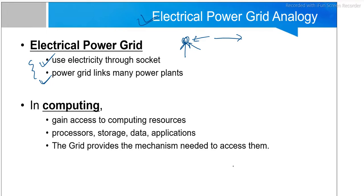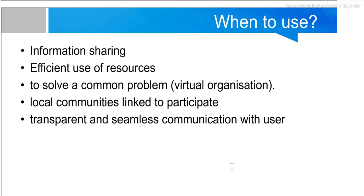In computing, the same concept applies: gaining access to computing resources. If we have a pool of resources — processors, storage, data, applications — more than one user can access those resources simultaneously. The grid provides the mechanism needed to access them, so we need to create one mechanism to access this pool of resources. This is how grid computing relates to the electrical power grid analogy.